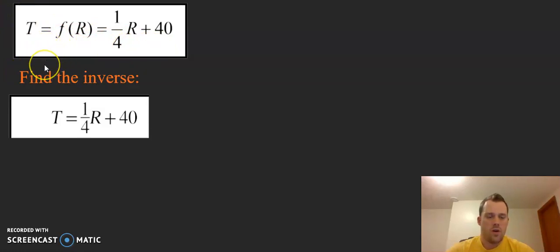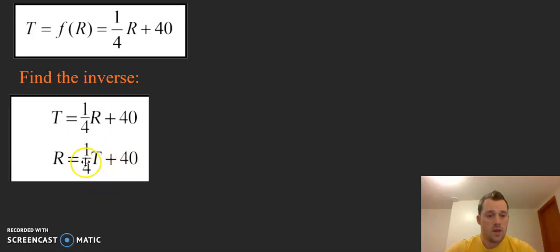But we don't really have to keep that in the back of our mind, like which value represents X and which represents Y, because we always just swap these variables or exchange one for the other. So we're going to end up writing R = (1/4)T + 40, and we're going to solve for this variable here.